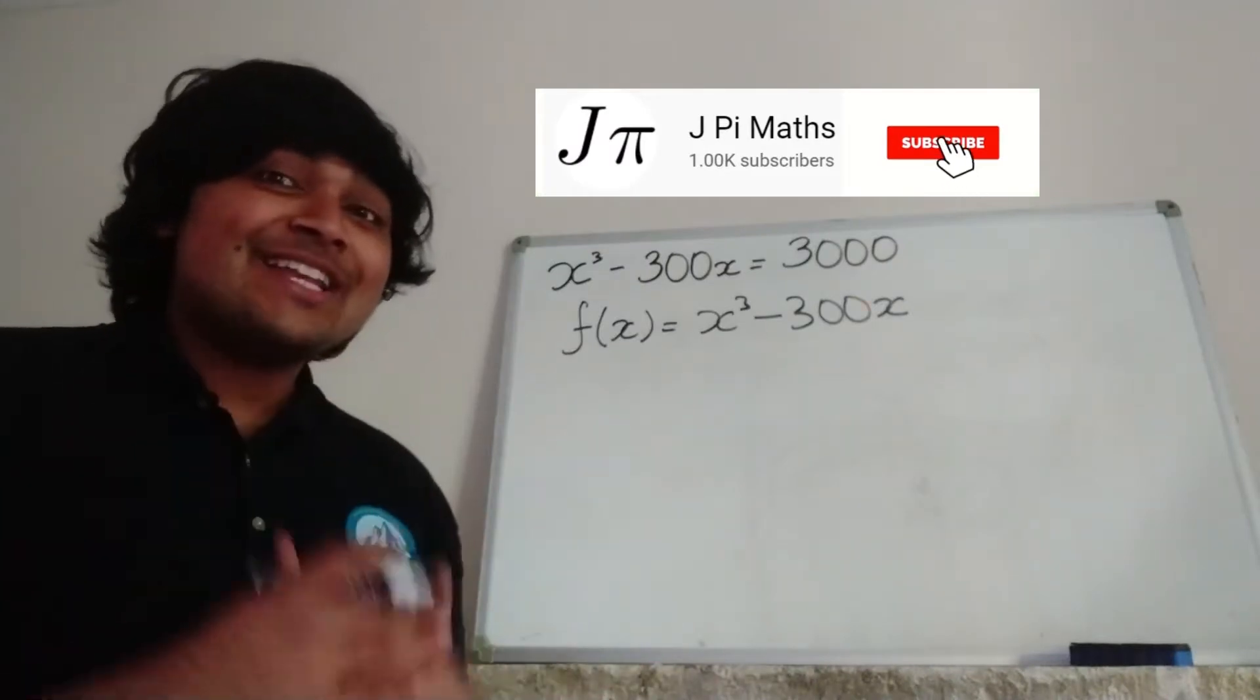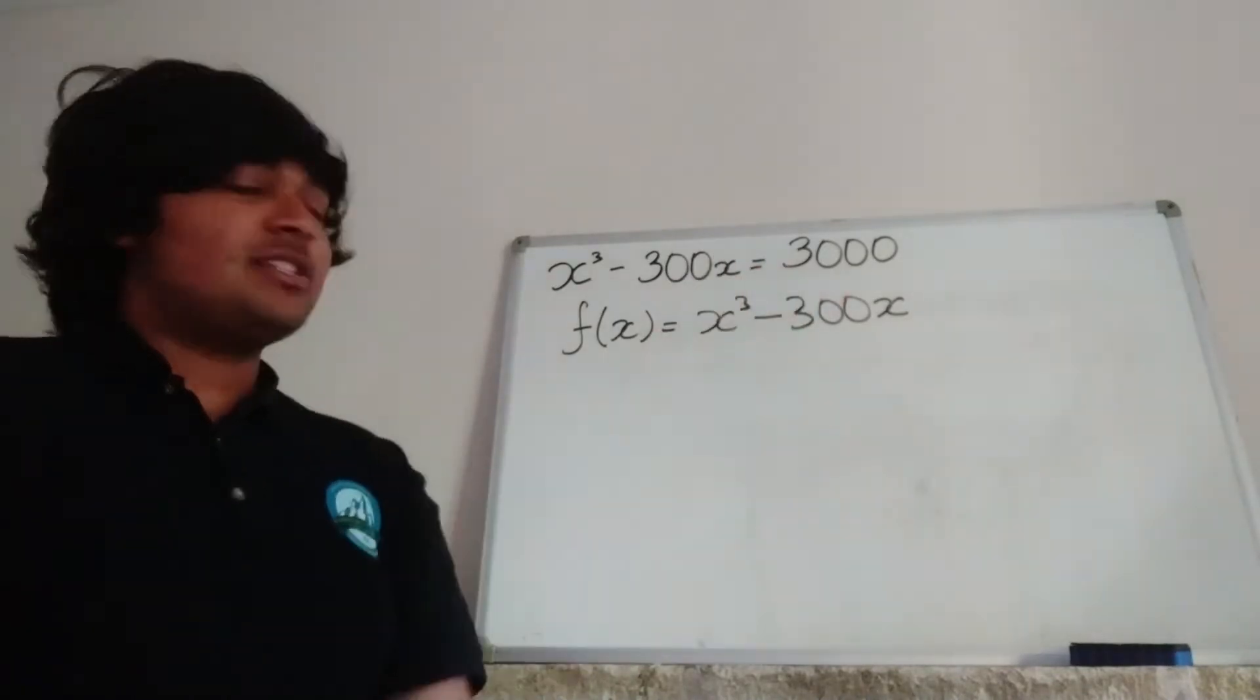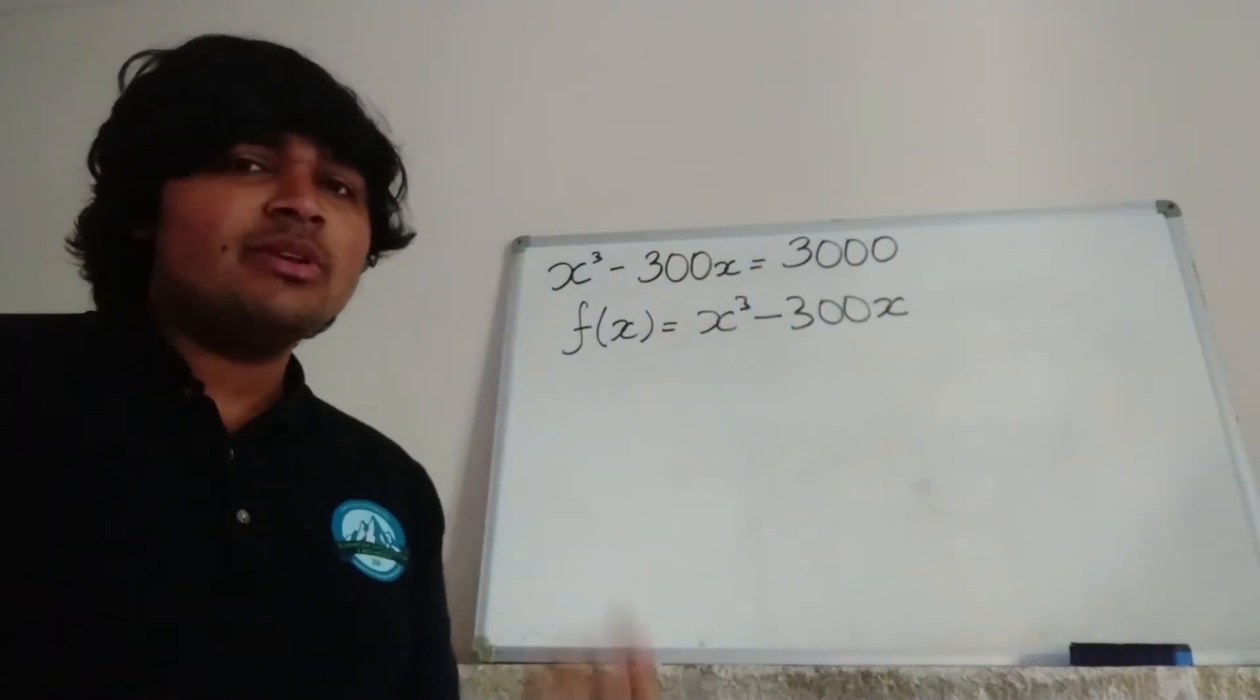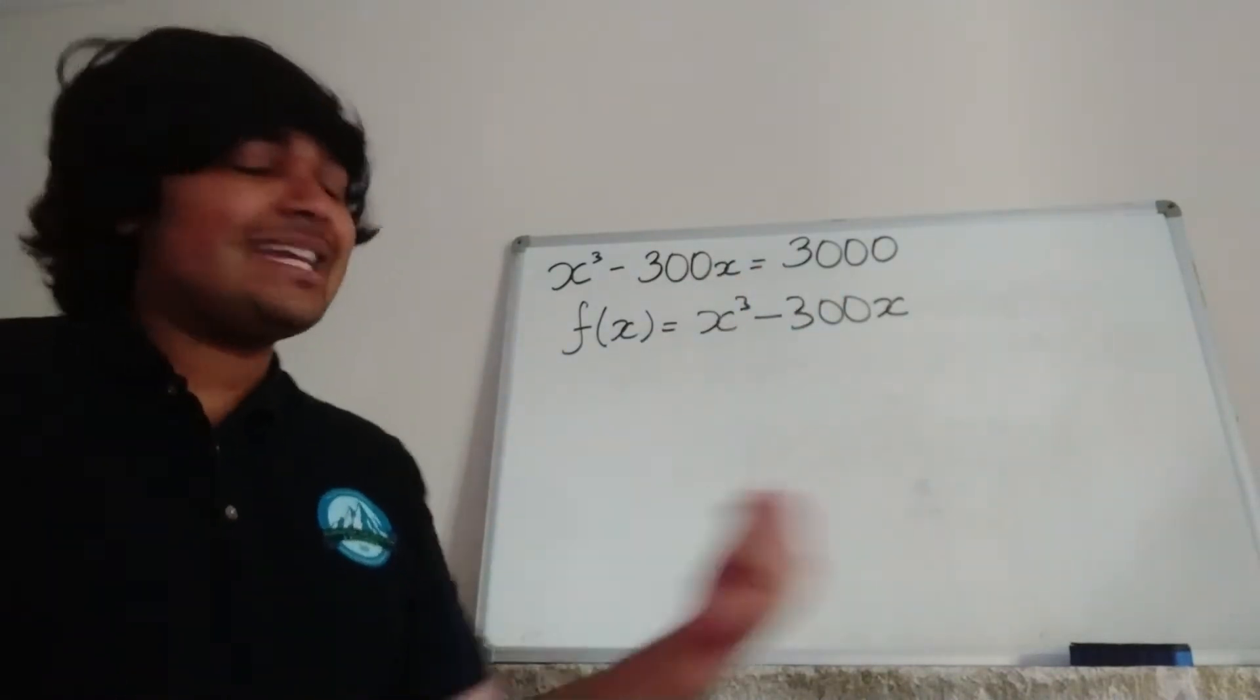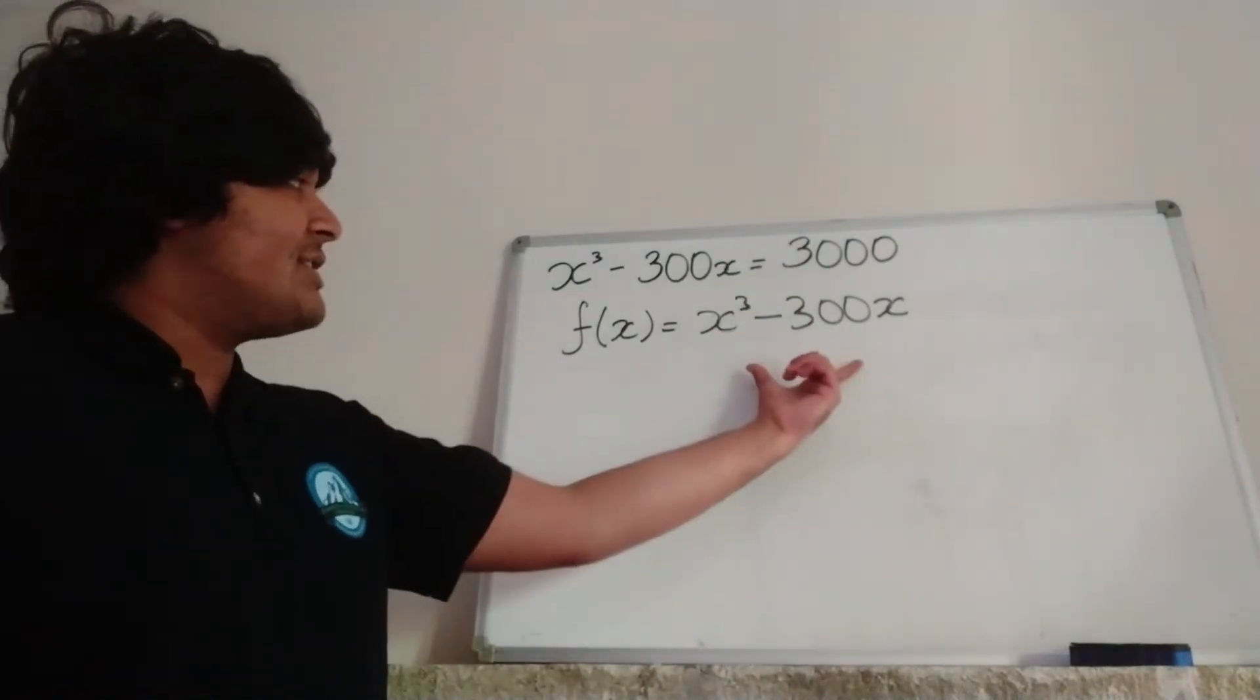Okay, so the way we're going to solve this problem is by drawing a graph. So I've introduced this function here, f of x equals x cubed minus 300x. And essentially what we want to do is find the number of real values x for which this guy here equals 3,000. Okay, so let's sketch this thing here.